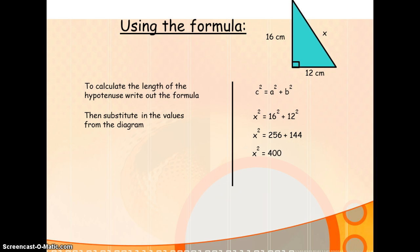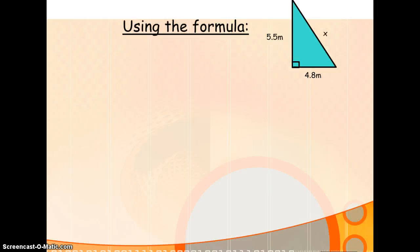What we have to do is find the square root. The square root of 400 is 20 centimetres, and that's our answer. Underline your answer and then you're ready to move on.